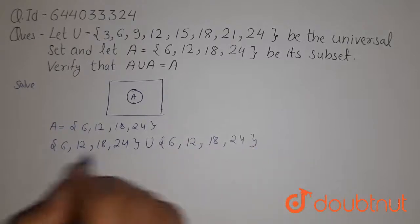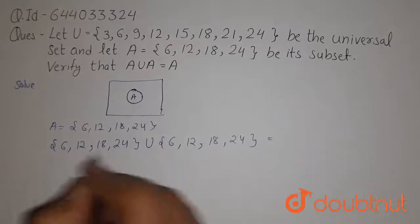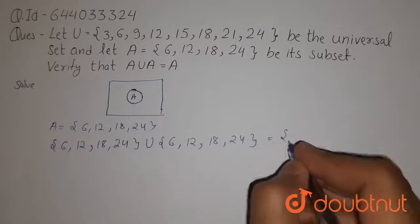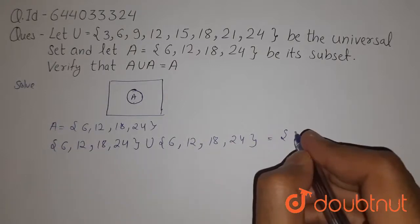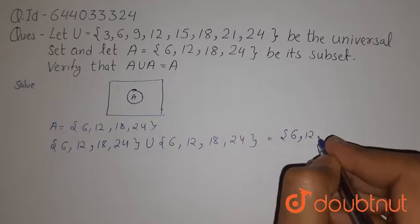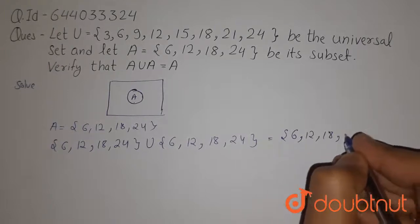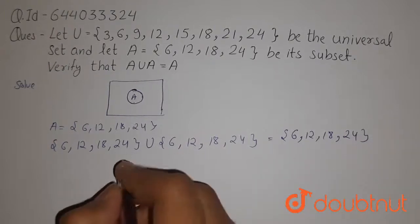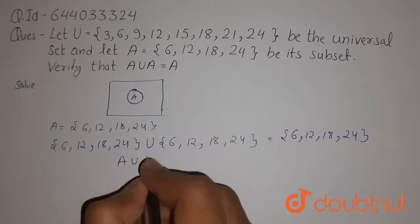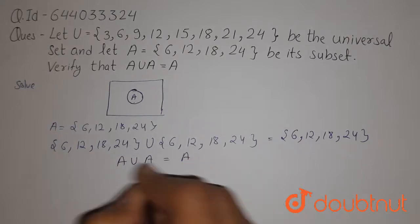Since all the items are identical, so all the items will come in the union of the set. So it will be 6, 12, 18, 24.